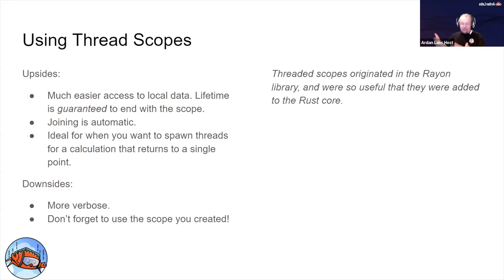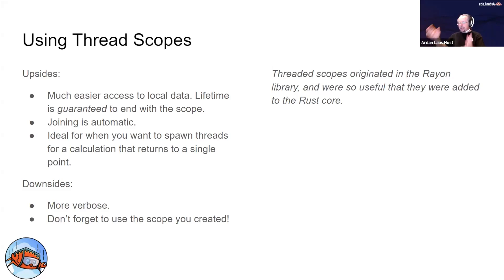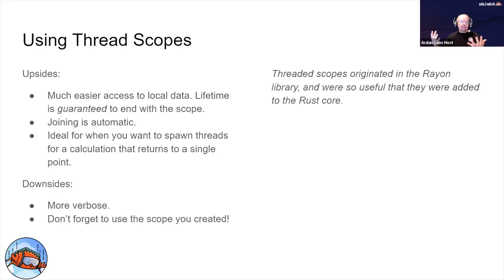Joining is automatic unless you actually want to return data, in which case you still need to read the join handles. This is perfect for those times where you have a big batch of data, you want to spawn off a bunch of threads, process it really hard, and squeeze the results back to one place — a very common pattern, particularly in the scientific or numeric world. The downside is that this is more verbose.